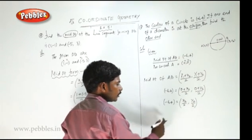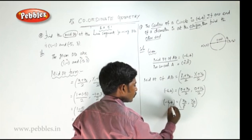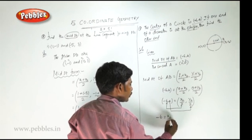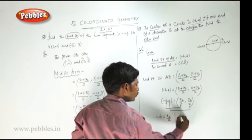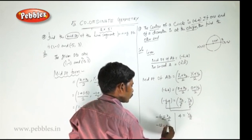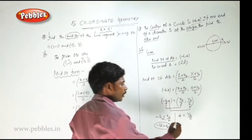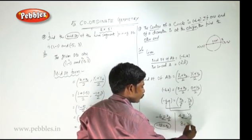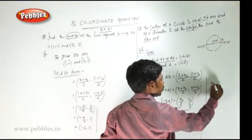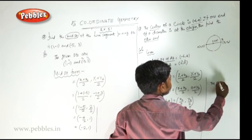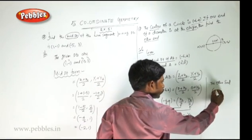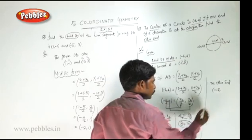Since the two points are equal, the axes are equal. So comparing: -6 = x2 / 2, and by cross multiplication x2 = -12. Similarly, 4 = y2 / 2, and by cross multiplication y2 = 8. Therefore, the other end of the diameter is (-12, 8).